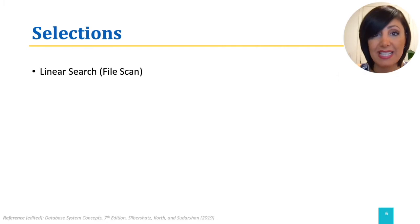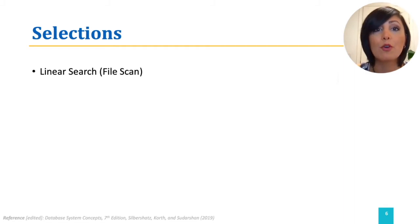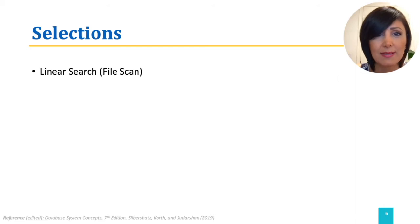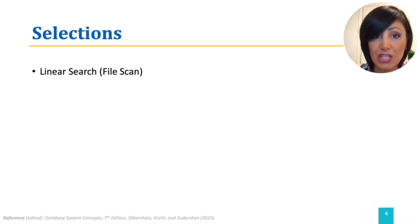To review: the simplest way of performing a selection is linear search by scanning a file. This means going through the tuples in a file on disk and performing a linear scan on all tuples until reaching the desired tuple meeting the condition. Although slower than other selections, linear search or file scan can always be used, and it is actually efficient if we need a range selection including a very large range.